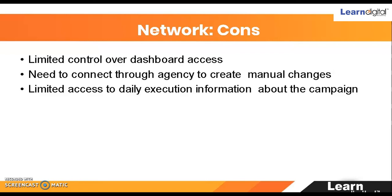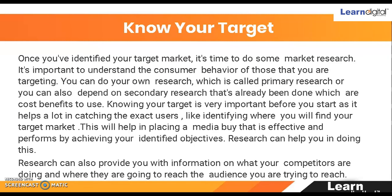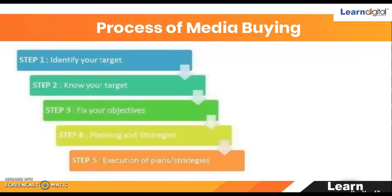So that's the overall scenario with media buying. I hope you have understood media buying. The five steps are important: identify your target, know your target, fix your objectives, plan the strategies, and execute the plan. Simply: find out who your audience is, create a proper persona for them, then finalize the proper ad space, fix your objective, do proper planning, and then execute it. This is all about media buying. Any doubts, you can connect to the trainer. Thank you.